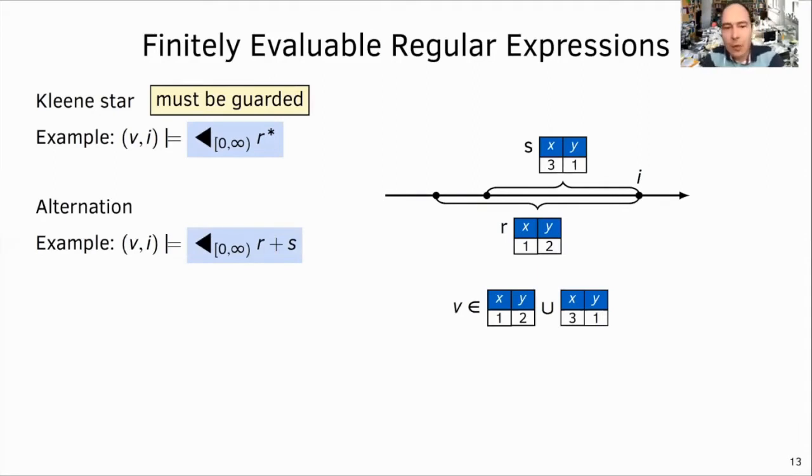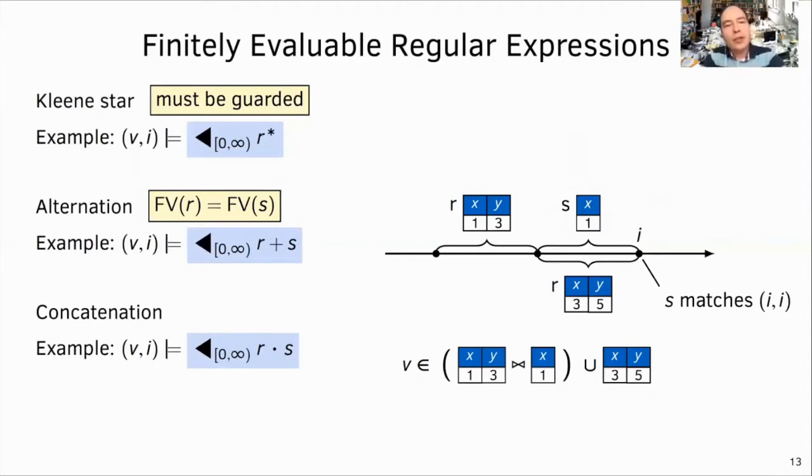Similarly, like for disjunction, we need to consider union of satisfying valuations of two alternative regular expressions. In the example on the right, the valuation of the alternation is the union of the table with the valuation of the r match, which is shown below the line, and its counterpart for the s match, shown above in the line. Hence, to perform the union, the two alternatives need to have the same free variables.